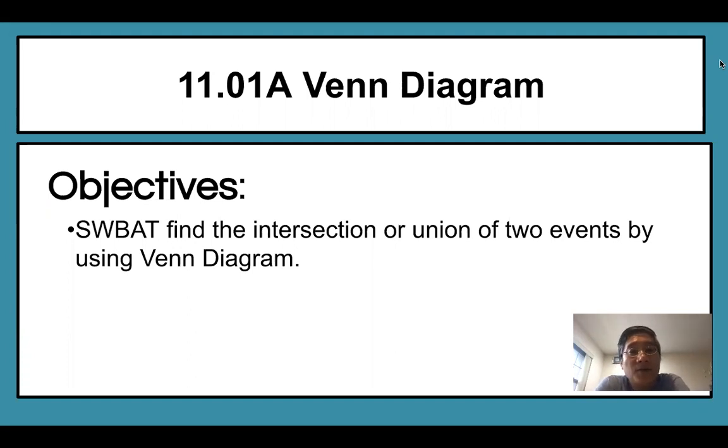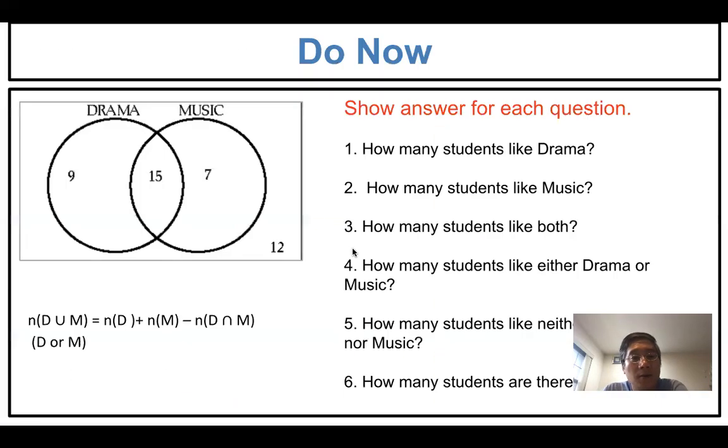Today, 11.1a Venn diagram. You are familiar with the Venn diagram, right? Today you are going to find the intersection or union of two events by using the Venn diagram. Let's see the simple example, the Do Now.